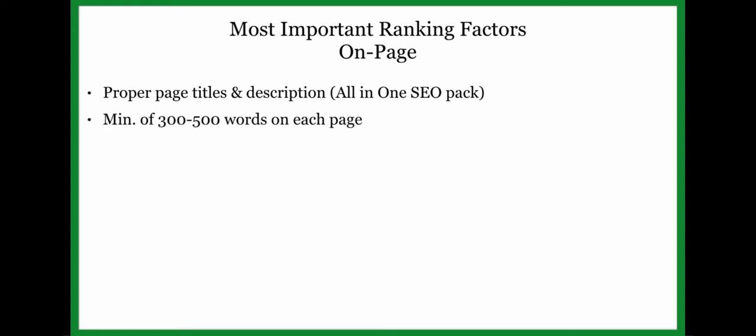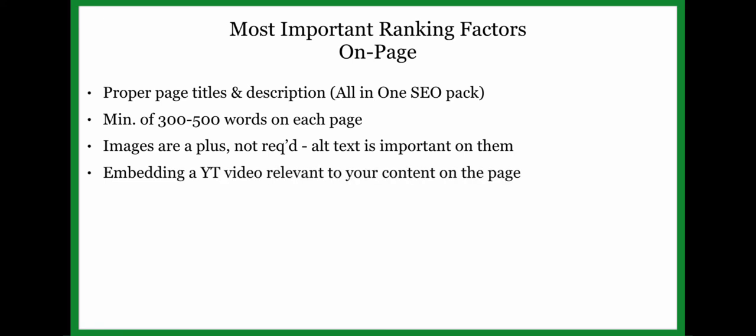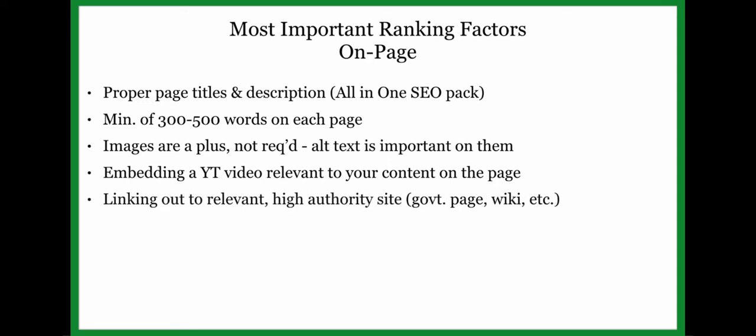Next is having at least 300 to 500 words on each page, with your keyword worked in naturally — for example, 'lawn care Brooklyn Park' or 'lawn care Champlin.' Images are not required but are a plus; if you use them, make sure the alternate text includes the service and the city. Next is embedding a YouTube video relevant to the content on your page, and then linking out to relevant high-authority sites.